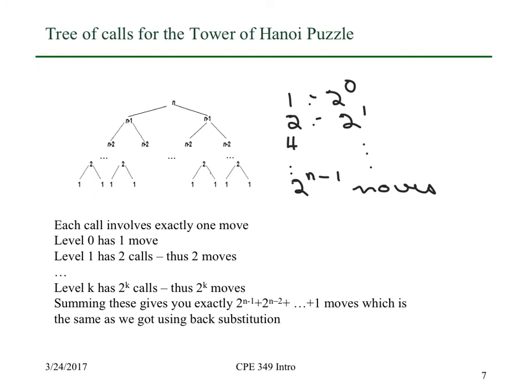Notice that in some ways you can think of the recursion tree method as the long way — making sure you understand exactly what's going on — whereas the back substitution method is sort of a shortcut. I recommend, at least for the first few times you do this, you draw the recursion tree, and it will give you a better sense for what the answer should be.